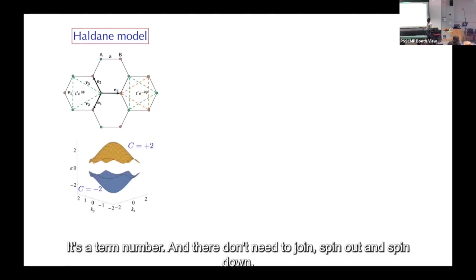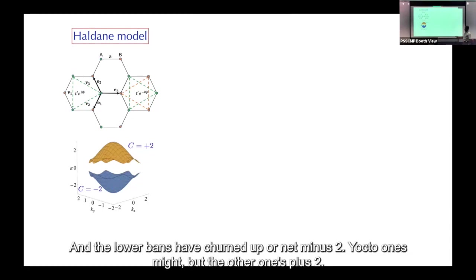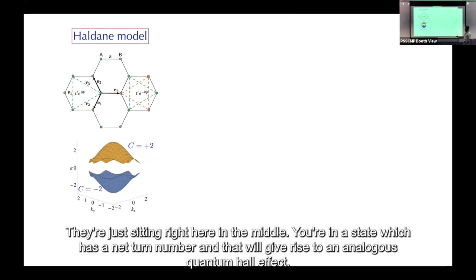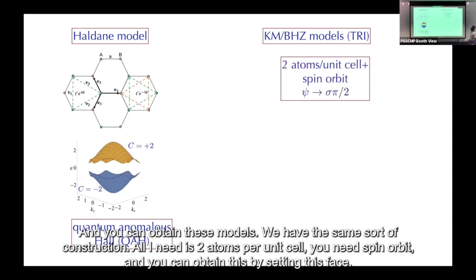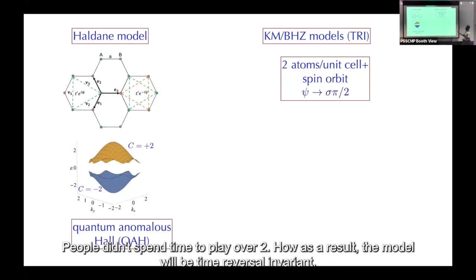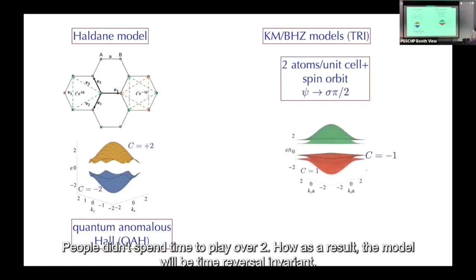The bands are spin-degenerate — spin up and spin down — and the lower bands have Chern number net minus two, the upper ones plus two. Sitting in the middle gives a state with a net Chern number, giving rise to an anomalous quantum Hall effect. The Kane-Mele model is the time-reversal-invariant version of this. You need two atoms per unit cell and spin-orbit coupling, obtained by setting the phase equal to spin times π/2.